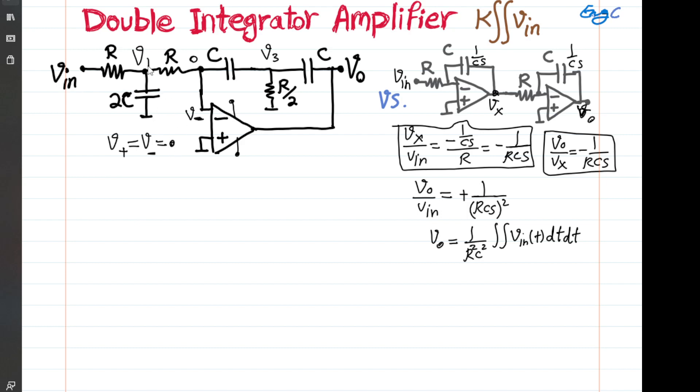Now let's write the KCL at node one, which is this node here. So you have one current coming this way from Vin, one current going through the cap, and one current going through the resistor. So with that KCL, we have Vin minus V1 divided by resistor R is equal to V1 over the impedance of cap.